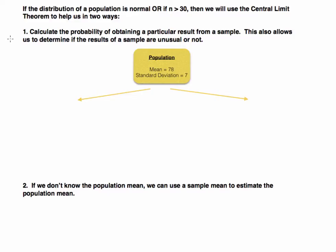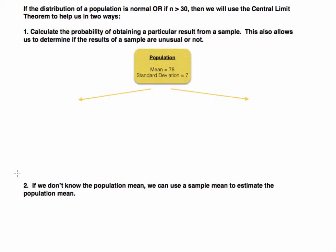Are the results unusual? How far is my sample mean from the overall mean? That's how we can use the central limit theorem. We're also going to be able to — and this is going to be next week — determine how we can use it if we don't know the population mean. The first part assumes we know the population mean; the second part, we don't. Can we use what we know about our sample to make inferences about that population mean? We're going to be creating confidence intervals.